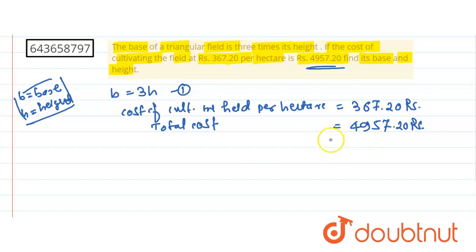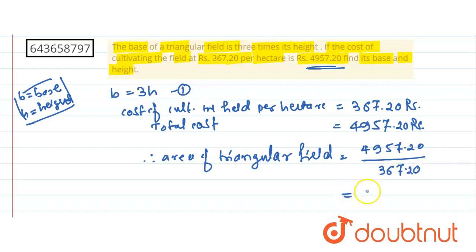So if we want the area of the field, therefore area of triangular field is simply the total cost divided by the cost per hectare. So this is 4957.20 divided by 367.20, and if we take this division we will get 13.5 hectare.